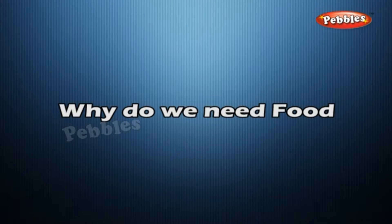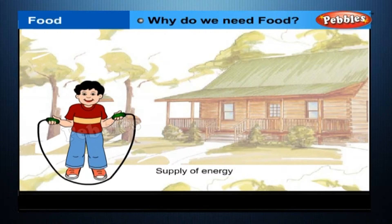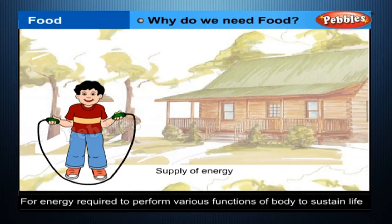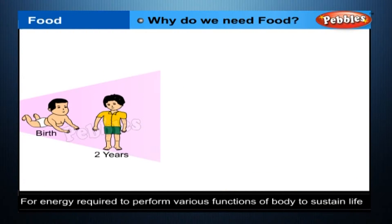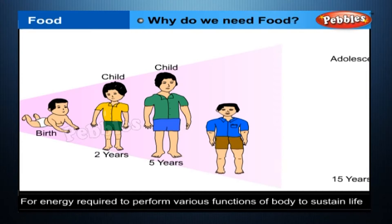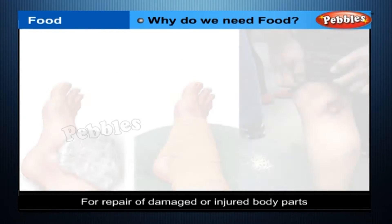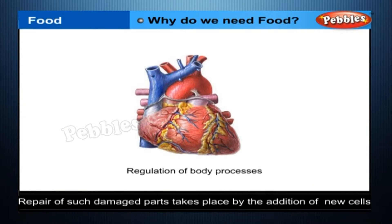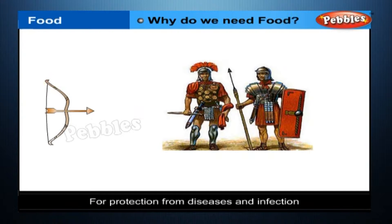Why do we need food? Food is required by the body for the following purposes: for energy required to perform various functions of the body to sustain life; for growth — without proper food, your growth would not be possible; for repair of damaged or injured body parts — when you get hurt, your skin is damaged and blood is lost, and repair takes place by the addition of new cells; and for protection from diseases and infection.